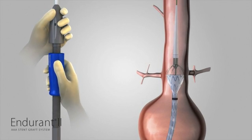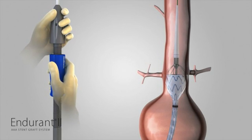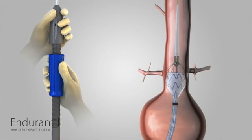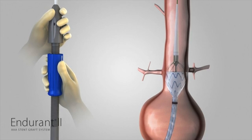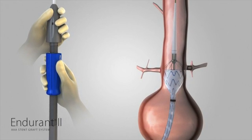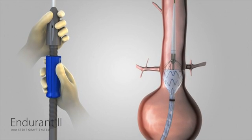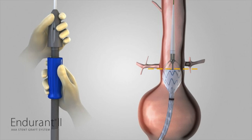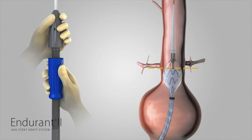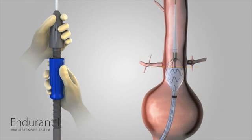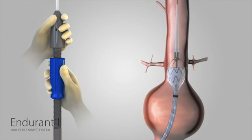Use angiography to verify the position of the stent graft in relation to the renal arteries. If needed, gently move the entire delivery system proximally or distally until the proximal edge of the graft material is even with the distal edge of the lowest renal artery.